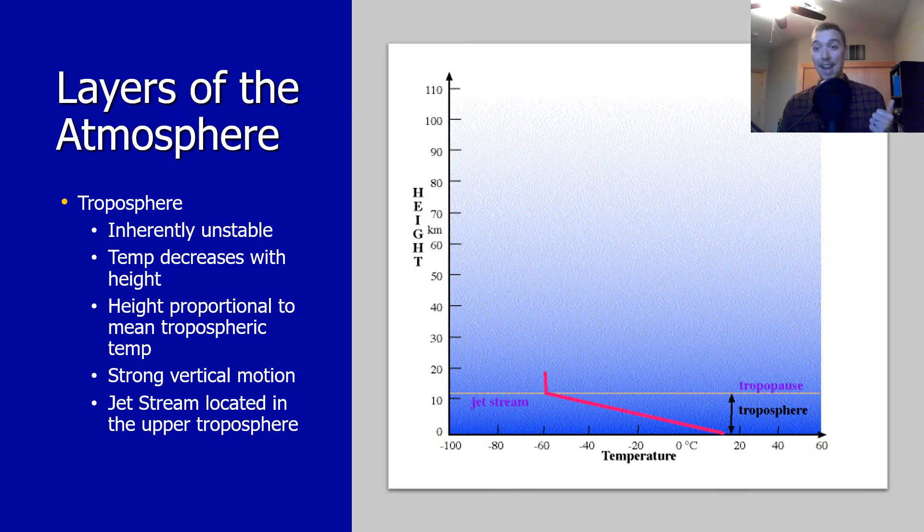This layer is inherently unstable. Because we have so much mixing of warm and cold air parcels, it's turbulent. There's a lot of hot air rising and cold air descending. We call it inherently unstable because the other layers of the atmosphere don't experience this to the same degree as we do.